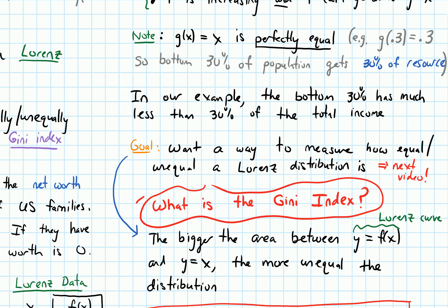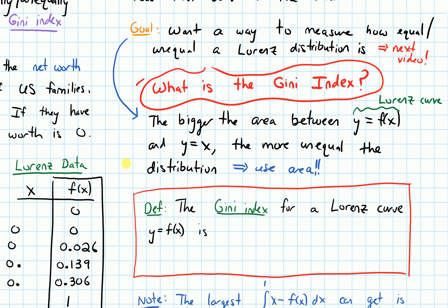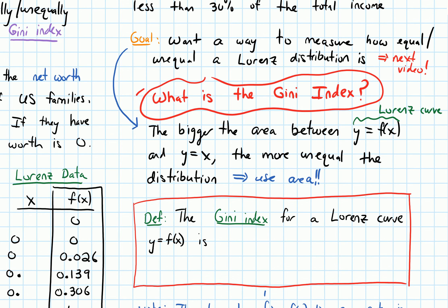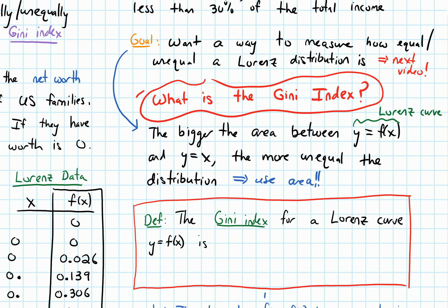So what we need is to measure the area. We're going to use area, and that's going to be the key idea. We're ready to define this thing called the Gini index. The Gini index for a Lorenz curve y = f(x) is G = 2∫₀¹[x - f(x)]dx.